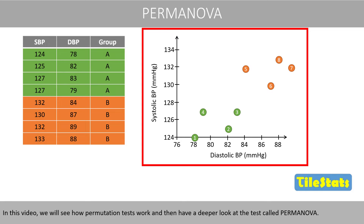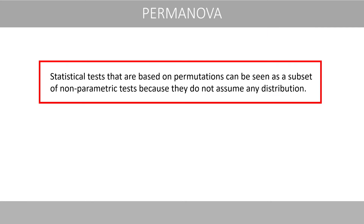In this video, we'll see how permutation tests work, and then have a deeper look at the test called PERMANOVA. Statistical tests that are based on permutations can be seen as a subset of non-parametric tests, because they do not assume any distribution.